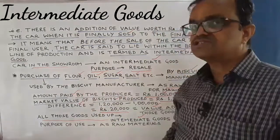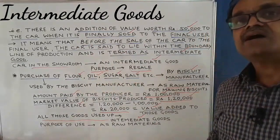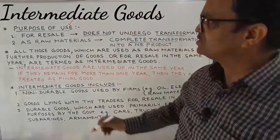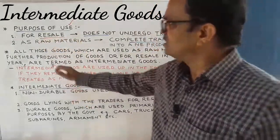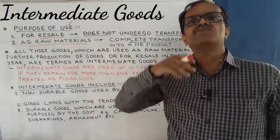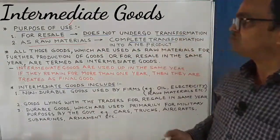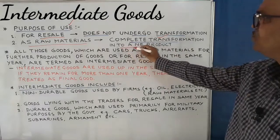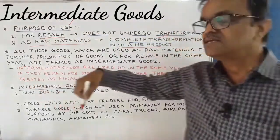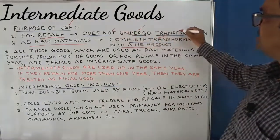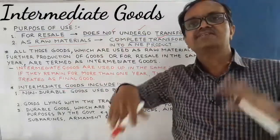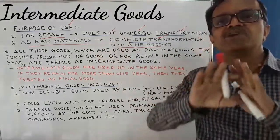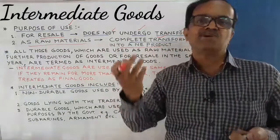We can say that intermediate goods are used for two purposes. First is resale, and another one is as raw materials. Goods are purchased for resale, or to be used as a raw material. If they are used as raw materials, then there is complete transformation into a new product. But if used for resale, they do not undergo any transformation — they are used as they are. If used as raw materials, there is a complete change and a new product is formed.